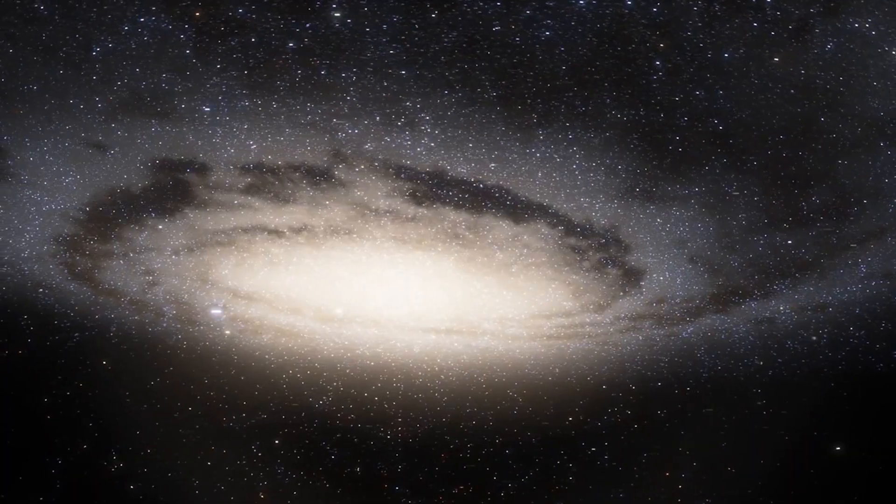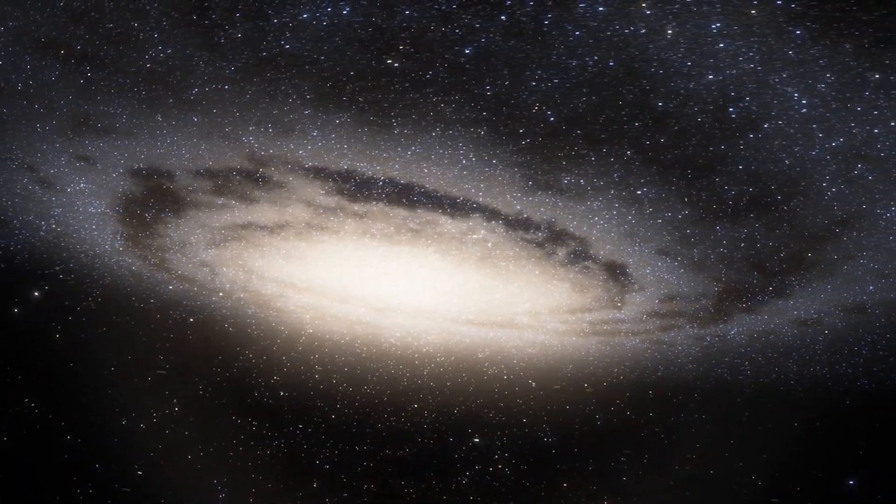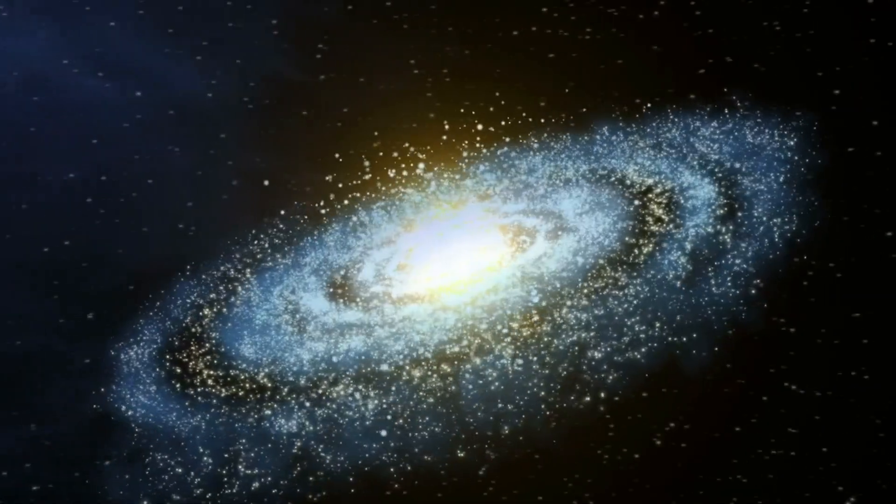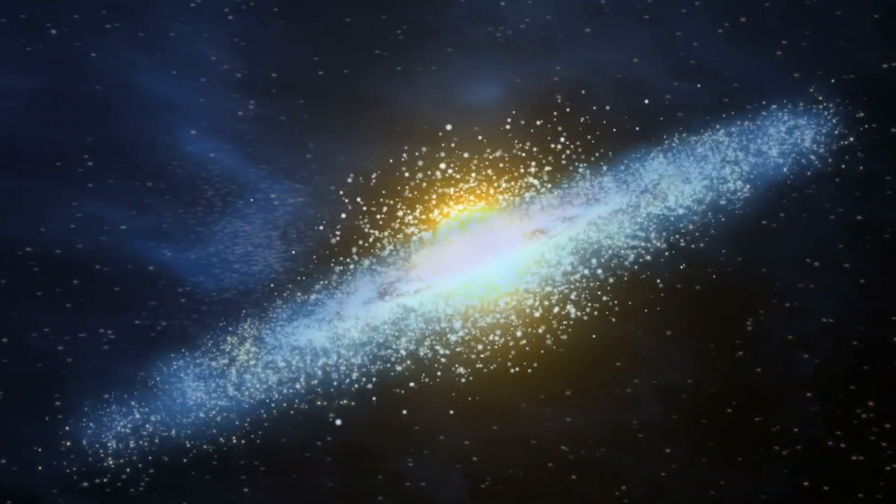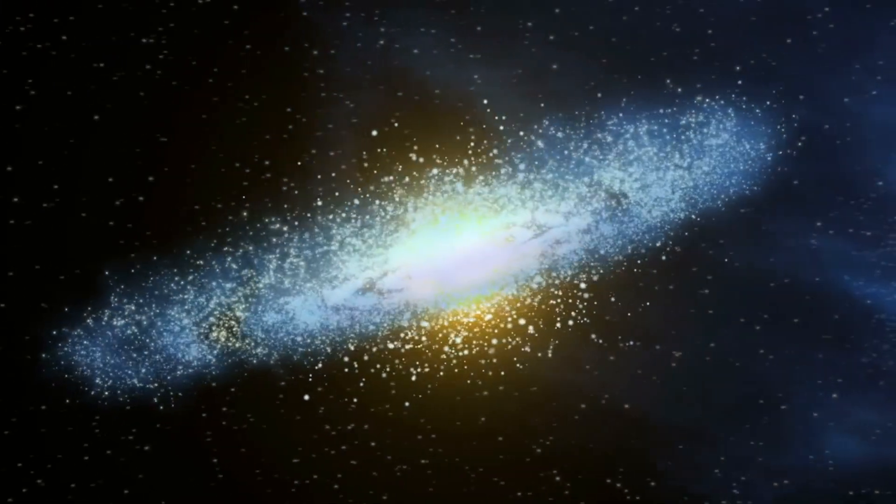For our solar system, this means that as we orbit the center of the Milky Way, we are likely moving through this halo of dark matter. This interaction with dark matter influences the trajectory and velocity of the solar system and could be subtly shaping our path.